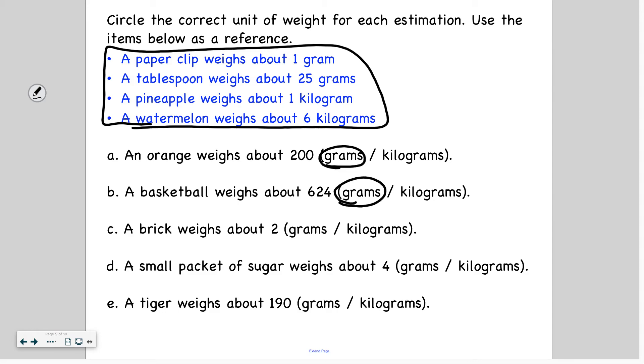So I want you to try these last three. The brick, small packet of sugar, and tiger. Pause now to solve those. Find your estimate. And then press play when you're ready to check over your estimates.